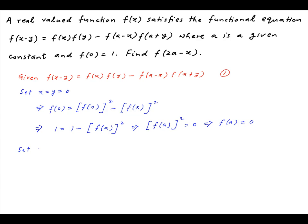Now we go back to equation 1 and set x equals a and y equals x minus a. Therefore the left hand side becomes f(a minus (x-a)) and on the right hand side the first term is f(a) times f(x-a) and the second term is f(0) times f(a+x-a).